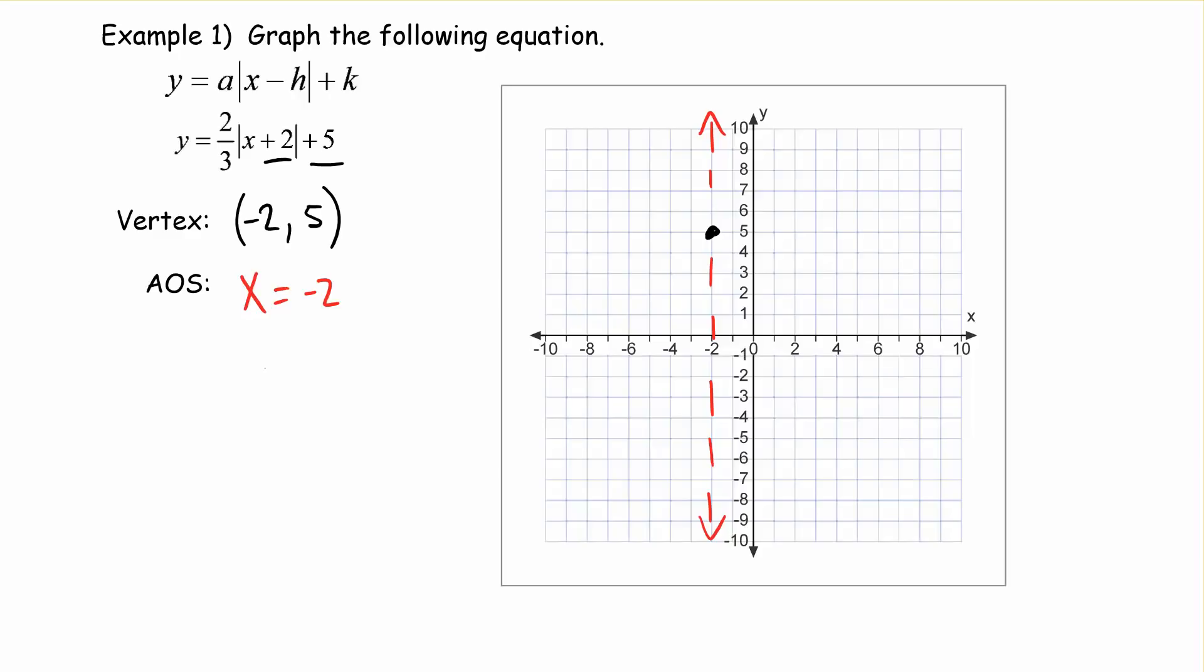So then from here we look at our slope. And our slope is 2 thirds. So that means we're going to go up 2 and right 3. Now, if I went up 2 and right 3, now I'm on one side of my axis of symmetry. So I can go up 2 and left 3 and find its symmetrical point. You can see how both of those points are 3 units from the axis of symmetry. So we can do that again. We can go up 2 and right 3 and put a point. And we can go on the other side and go up 2 and left 3 and we have a point. And so there's our graph.